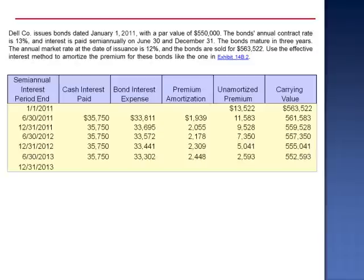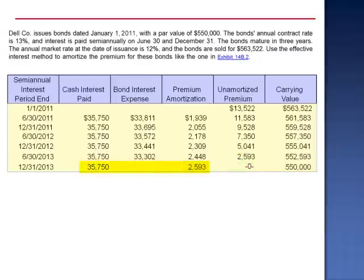December 31, 2013: cash interest paid $35,750. In the final period, we know that the balance in the unamortized premium needs to be zero, so that the carrying value is $550,000. The amortization of the premium must be $2,593. So the bond interest expense, including the impact of rounding, is $33,156.